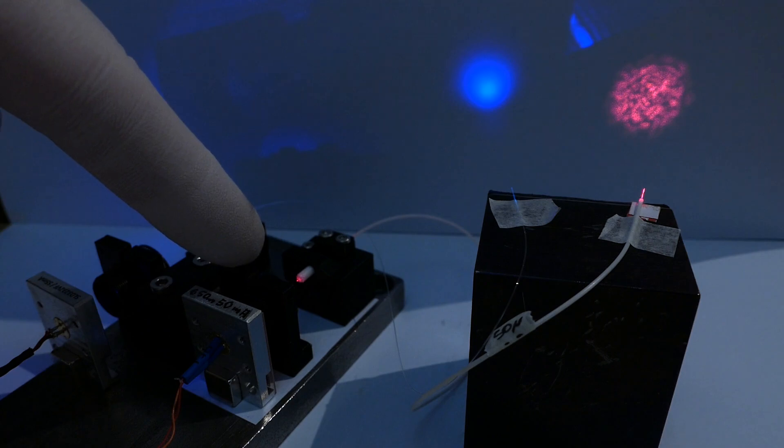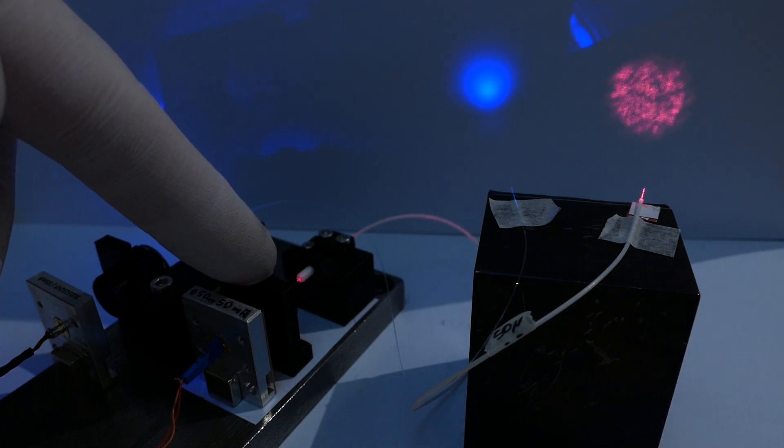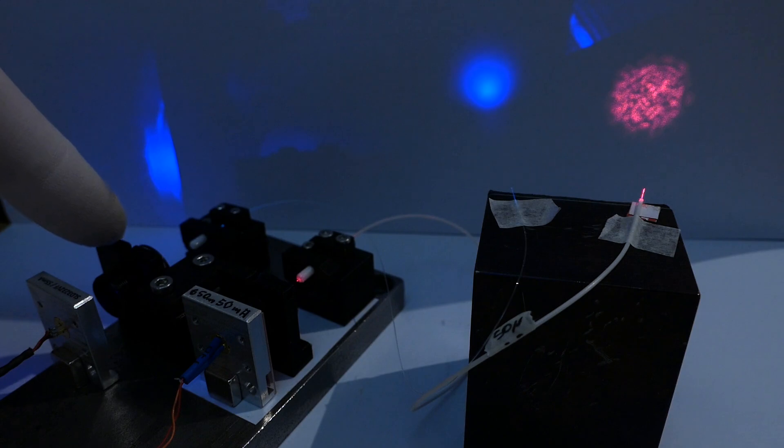By moving the focusing lens slightly, the light is coupled differently to the fiber. In a multi-mode fiber, you can see how the energy distribution among the modes changes, which alters the beam profile. Since there is only a single mode on the left, only the overall coupling efficiency changes. This is observed as changes in brightness.